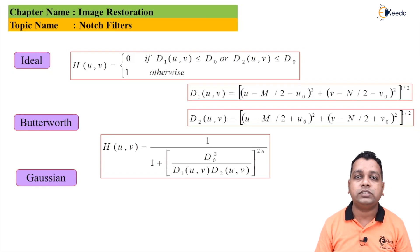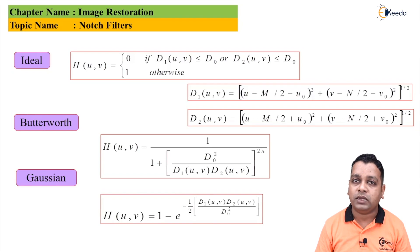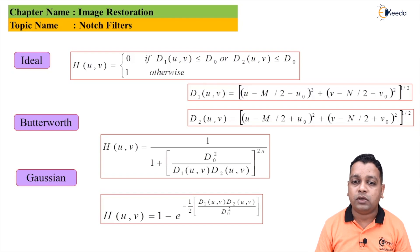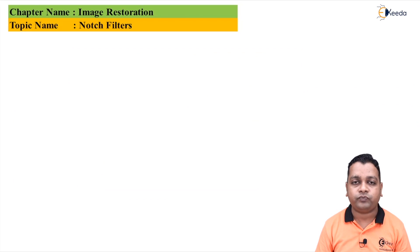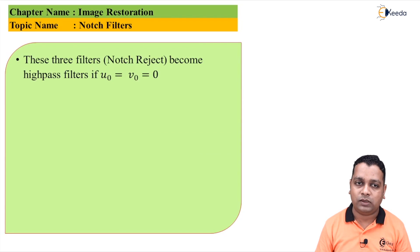The Gaussian type notch filter is represented as H(U,V) = 1 − e^(−(1/2) · D1(U,V) · D2(U,V) / D0²). The definitions of D0, D1, and D2 are the same as previously discussed.